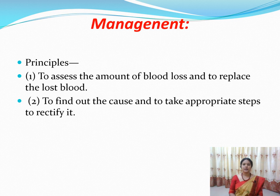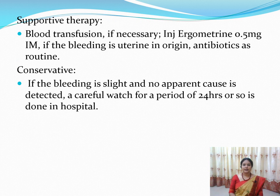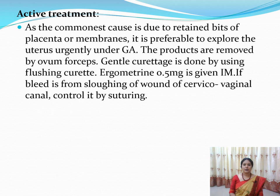Management of secondary PPH: assess the amount of blood loss and replace it if necessary. Identify the exact cause and manage accordingly. Give supportive therapy including blood transfusion if necessary. Ergometrine 0.5 mg intramuscularly can be given if uterine bleeding is present. Start antibiotics as bleeding may be due to sepsis. For conservative management, if bleeding is slight and not affecting the mother's health status, wait and watch for 24 hours — it may stop spontaneously.